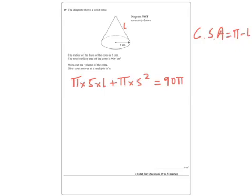So therefore, I get 5L plus 25 equals 90. So, because I'm going to run out of room, L's got to be 13.